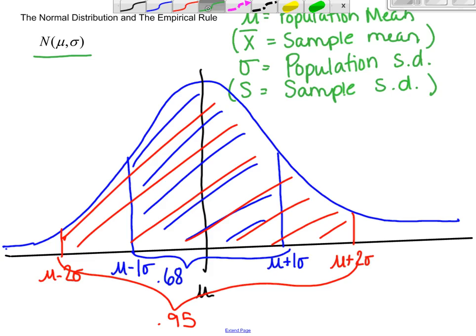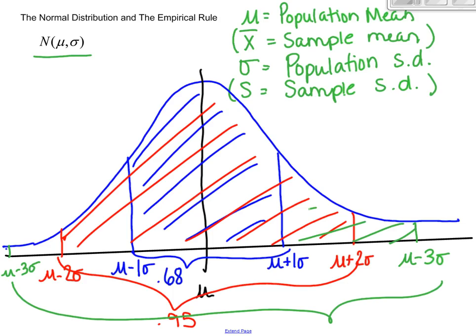And then finally, if you want to go out three standard deviations. Again, my drawing is not that great, so these are symmetric. If you want to go out three standard deviations, so all this area right in here, all the way here, you get 99.7% of the data. So most of the data for anything that's normal is within three standard deviations. That means that 0.003 or 0.3% of the data is outside of three standard deviations.